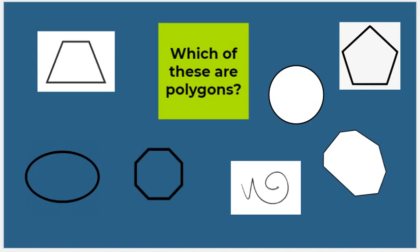Polygons are closed shapes with straight sides, and they have to have three or more straight sides and angles. Let's take a look at these shapes and figure out which of these are polygons.